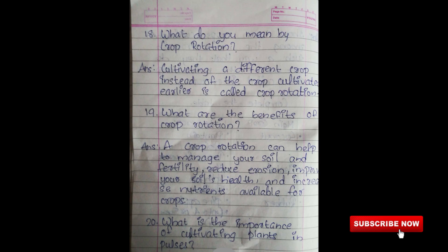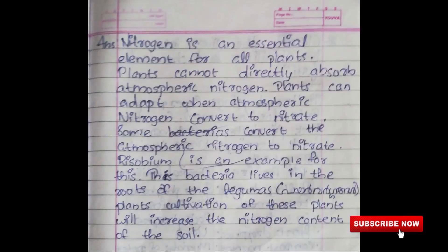Twentieth question: What is the importance of cultivating plants and pulses? Answer: Nitrogen is an essential element for all plants. Plants cannot directly absorb atmospheric nitrogen, but some bacteria convert atmospheric nitrogen to nitrate. Rhizobium is an example — this bacteria lives in the roots of leguminous plants. Cultivation of these plants will increase the nitrogen content of the soil.